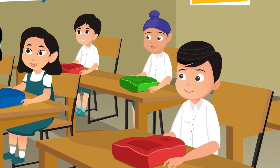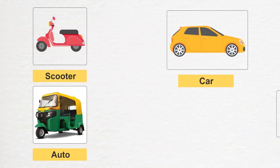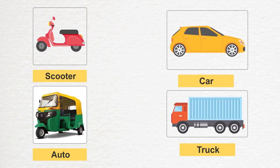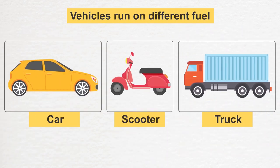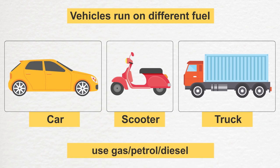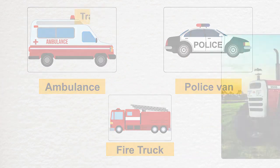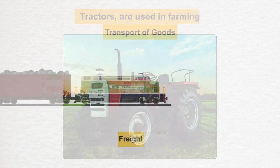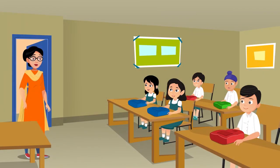Raju recapped the lesson: today we learned about the various means of transport. We learned how today's vehicles are different from those of old days. We identified vehicles with different numbers of wheels and learned about various kinds of fuel on which different vehicles run. At the end, we learned about vehicles which help in emergency situations, in farming, and in transportation of goods. The teacher concluded: well done, Raju — see you tomorrow, students! Bye bye!